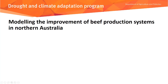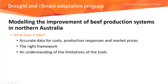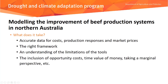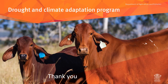In summary, modelling the improvement of beef production systems in Northern Australia requires accurate data for cost, production responses, and market prices; the right framework; understanding the limitations of the tools; and inclusion of opportunity costs, time value of money, and a marginal perspective — all the basic principles of production and economics. You've got to have both the economics and the production science. It's therefore a team effort: economists can't do this by themselves, and the production people can't do this by themselves. You need both. Thank you.